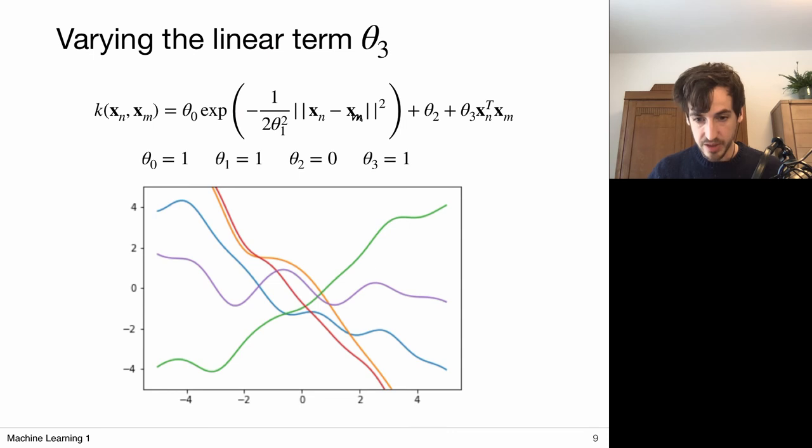Let's have a look at this linear term. I call this a linear term, theta three, so this particular part, and I'm turning off this offset term again. What you see now is these random functions are still random, but it seems they have some drift in them. They have a particular slope, and this is why we can call this actually a linear term.